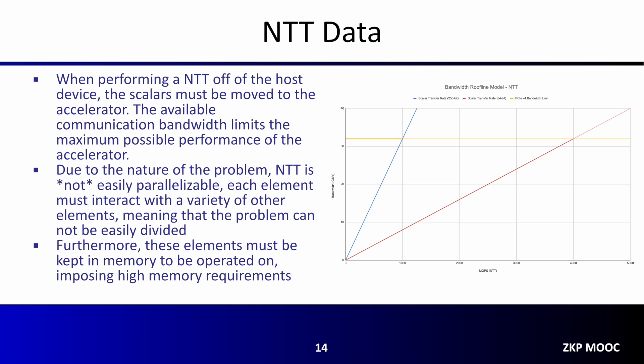Similar to MSM, when performing an NTT off of the host device the scalars must also be moved over to the accelerator, and again communication bandwidth can limit the maximum possible performance. However, unique to NTT is that the problem is not easily parallelizable — each element must interact with a variety of other elements during the algorithm's operations, meaning the problem cannot be easily divided. Furthermore, because these elements interact with each other they must be kept in memory and operated on, imposing high memory requirements.